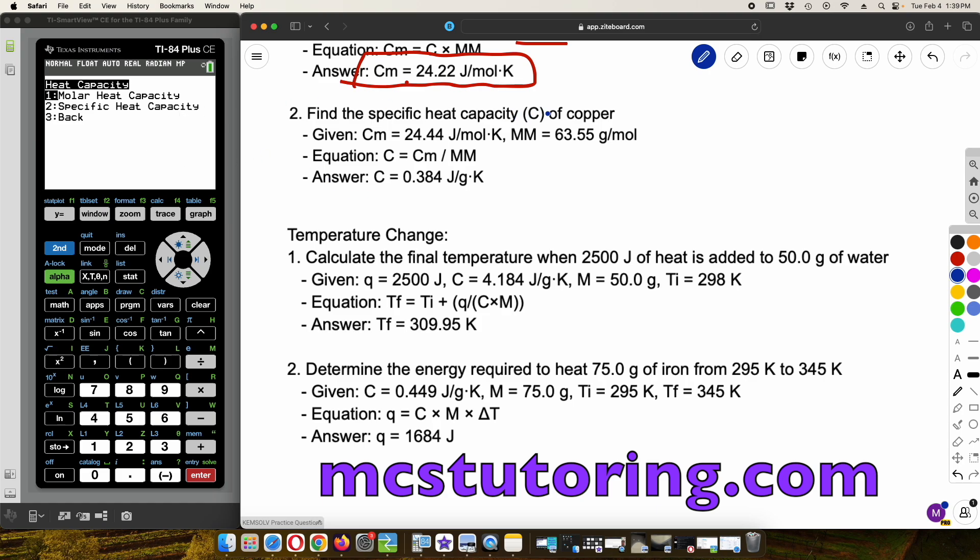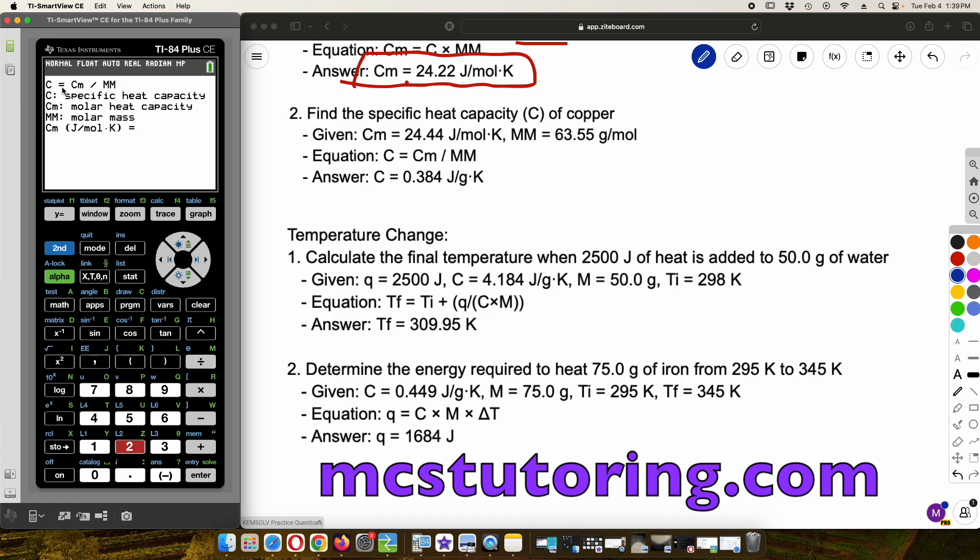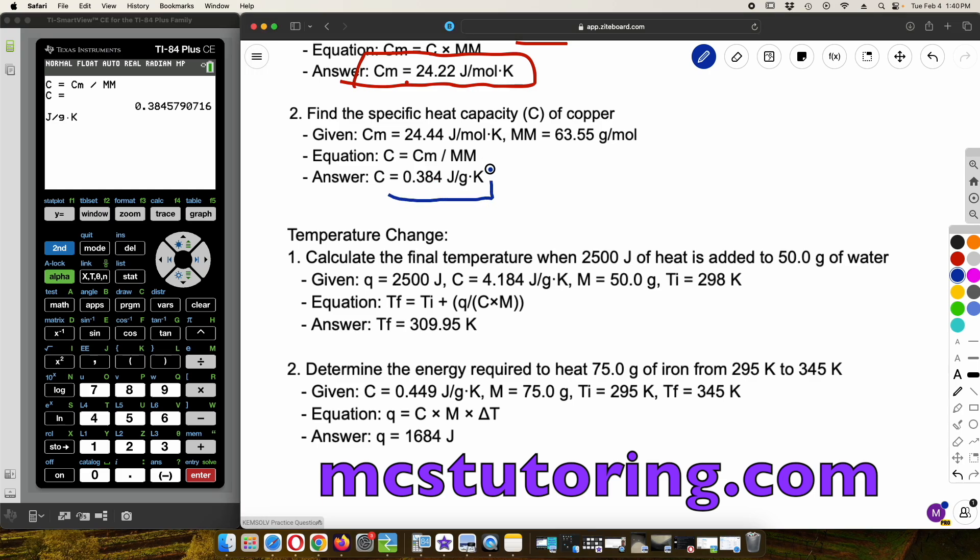Okay. Now we want to find the specific heat capacity of copper. So let's do that option two. And then, again, it gives you the formula, which is fantastic. So you want to write that down, too, if you have to show your work for this. And what is the C sub M? It's 24.44. And then what is the MM? That's 63.55. Fantastic. There we go. 0.3845. Okay. And again, we've got a rounding error here. I'm just going to assume this is right. But if I'm not and there's a strong chem student watching, please tell me. And I will update and change this video. Okay.